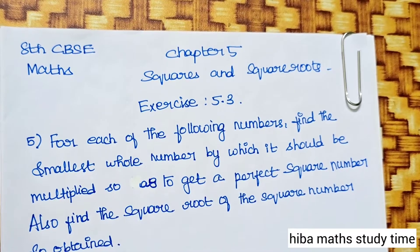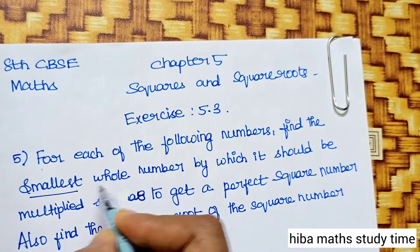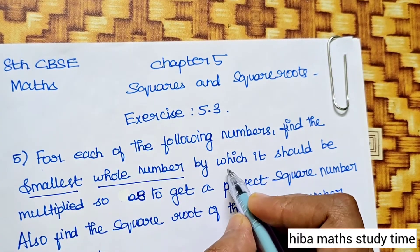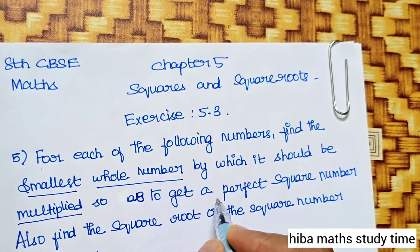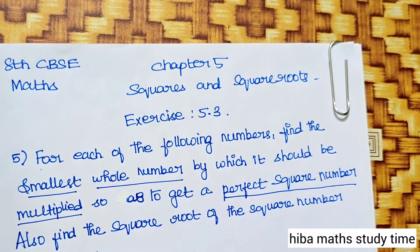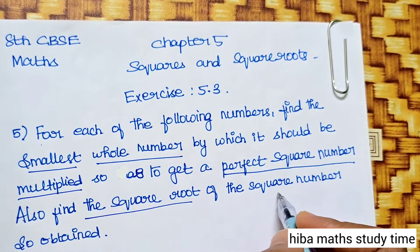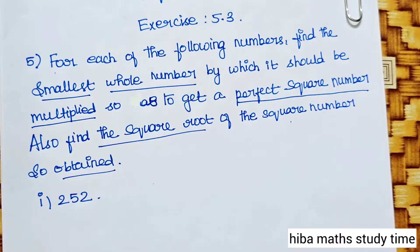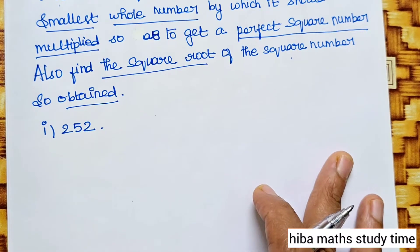We will solve every problem. First, understand the question: for each of the following numbers, find the smallest whole number by which it should be multiplied so as to get a perfect square number. Also find the square root of the perfect square number so obtained. Question understood — we can solve it.